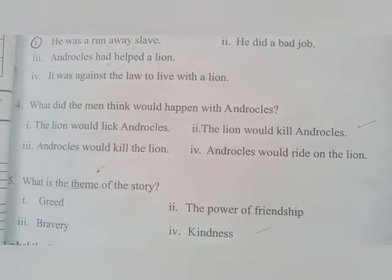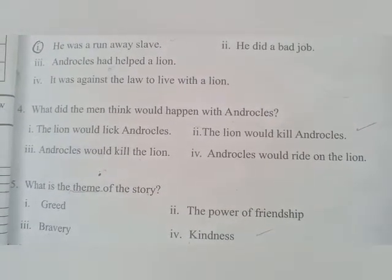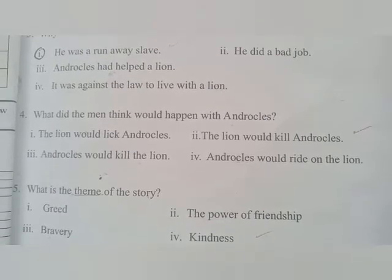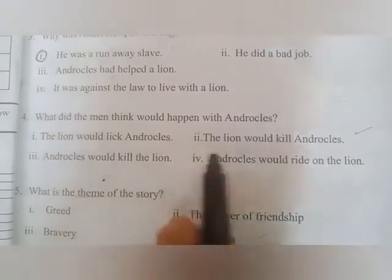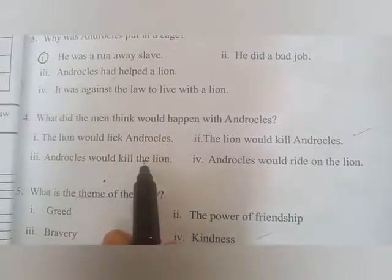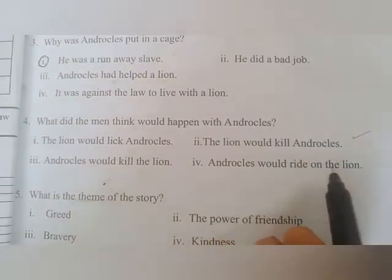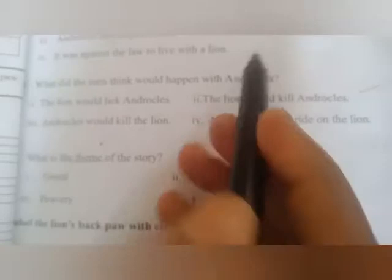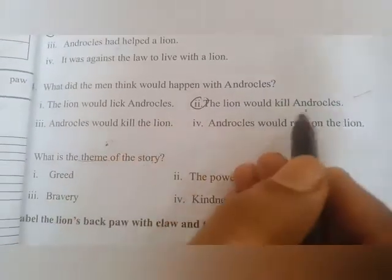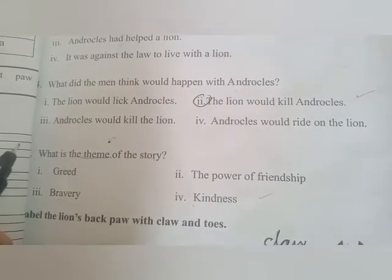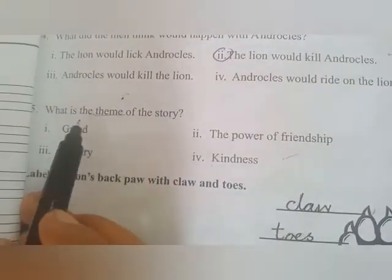Next: What did people think would happen to Androcles? You remember the story — when Androcles and the lion met again, what did people think would happen? The options are: the lion would lick Androcles; the lion would kill Androcles; Androcles would kill the lion; or Androcles would ride the lion. The correct answer is the second one — the lion would kill Androcles — because people thought the lion would kill him, but that did not happen.